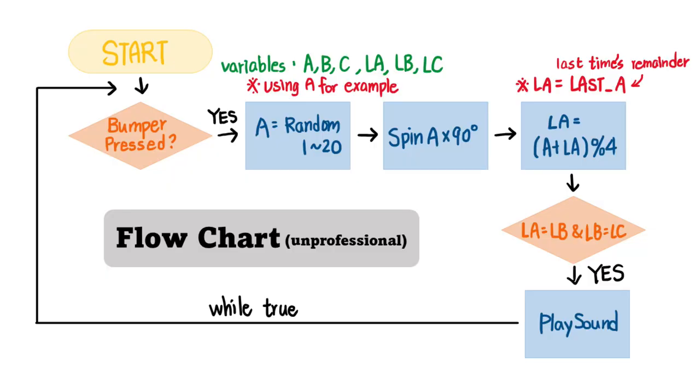Next we are going to talk about the flow chart. First we'll start the program and see if the bumper is pressed or not. If yes, then it will have a random number from 1 to 20 which means how many times we have to spin 90 degrees, and then we will times the number by 90 which decides how many degrees the wheel is going to spin.